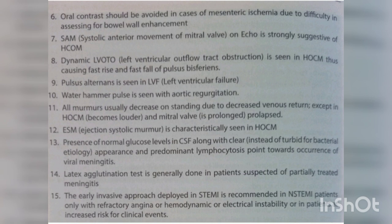All murmurs usually decrease on standing due to decreased venous return, except in HOCM where it becomes louder, and in mitral valve prolapse it is prolonged. Ejection systolic murmur is characteristically seen in HOCM. Normal glucose levels in CSF along with clear appearance and predominant lymphocytosis point toward viral meningitis. Latex agglutination test is done in patients suspected of partially treated meningitis.